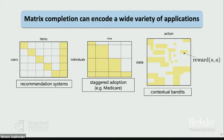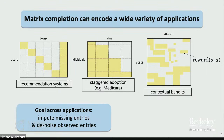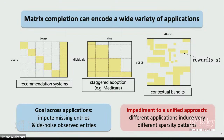The first thing I hope to leave you with is that matrix completion is a lot more rich than just recommendation systems — it can encode a wide variety of problems, including staggered adoption, contextual bandits, and more. The goal across these applications is to impute missing entries and denoise observed entries, since they might be observed noisily. The challenge towards a unified approach is that different applications induce very different sparsity patterns.